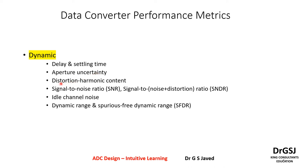Third is distortion and harmonic content. This is a frequency domain parameter. Distortion is anything which disturbs the signal. A harmonic is a multiplicative frequency — it could be twice the frequency or thrice the frequency; each one of them is called a harmonic. This is analogous to how octaves work in musical notes, where completing seven notes takes you to a higher octave — similarly, it is called a higher harmonic in signal content.